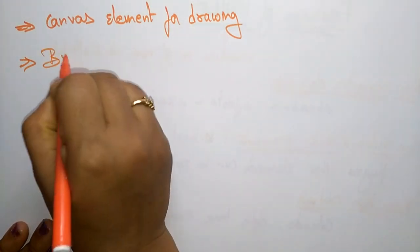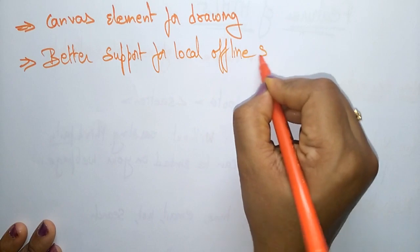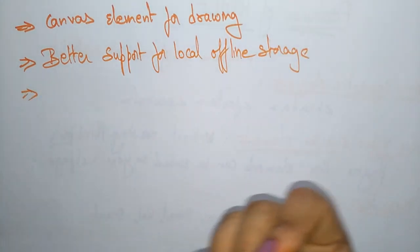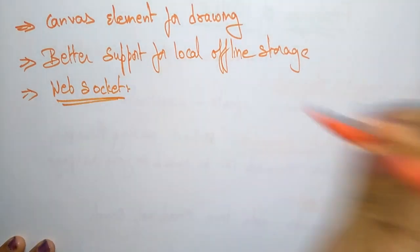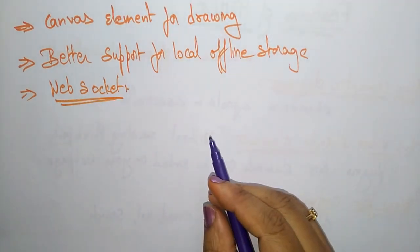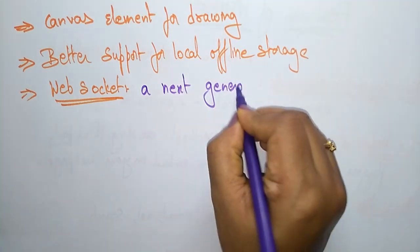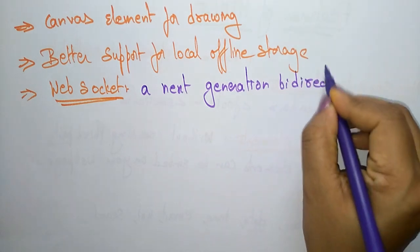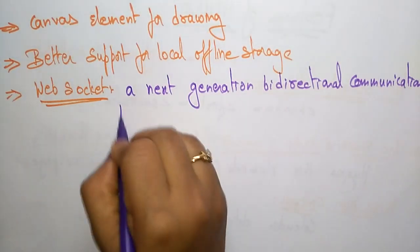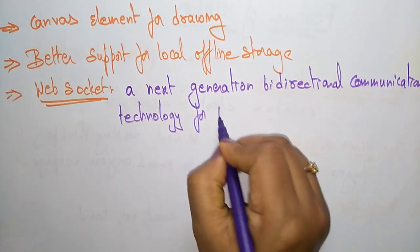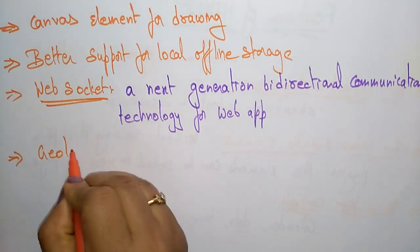The next feature is better support for local offline storage. HTML5 also has the web socket feature. A web socket is a next-generation bi-directional communication technology for web applications.